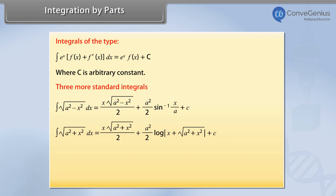The integral of √(a²+x²) is equal to (x/2)·√(a²+x²) plus (a²/2)·log|x + √(a²+x²)| plus c.